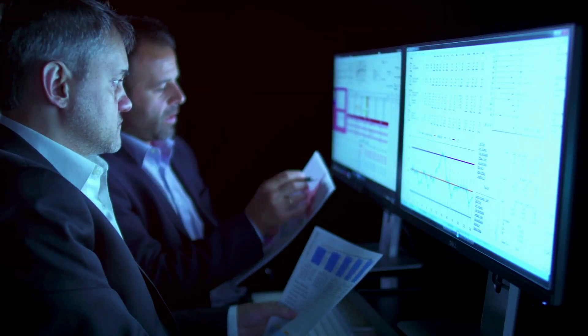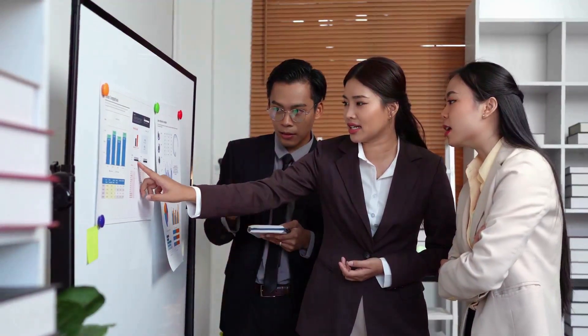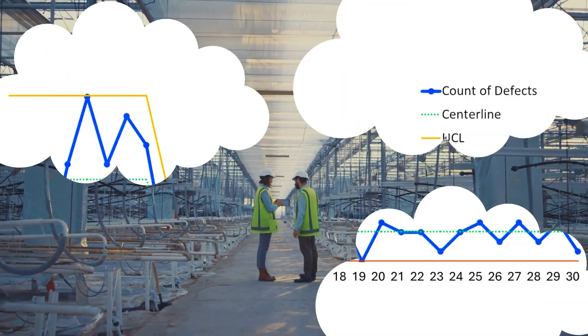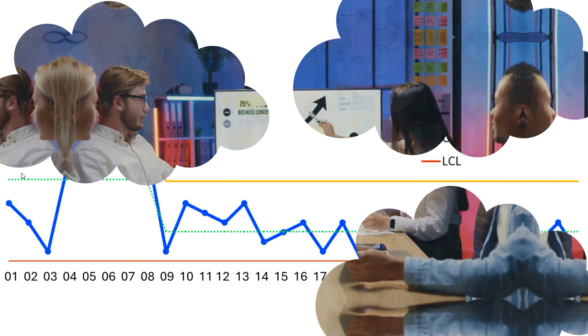Control chart: sustaining improvements. The final tool in our arsenal is the control chart, which helps monitor and sustain improvements by distinguishing between normal variation and special causes of variation. For our toaster production process, we initially observed an average of eight defects per day with significant variation. After implementing humidity controls, defects dropped to an average of three per day — a remarkable improvement. The control chart confirmed that our process was now stable, allowing us to sustain these gains over time.